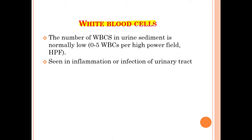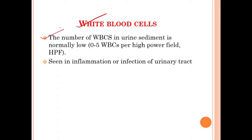The next cell is the white blood cell (WBC). The number of WBCs in the urine sediment is normally low — 0 to 5 WBCs counted per high power field (HPF). WBCs can be seen in the inflammation or infection of the urinary tract in a suspected animal.